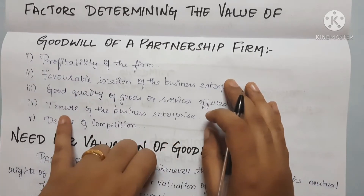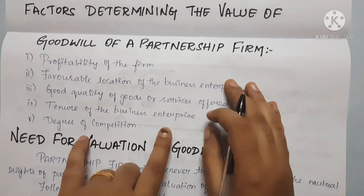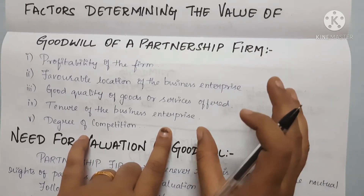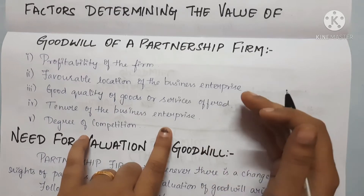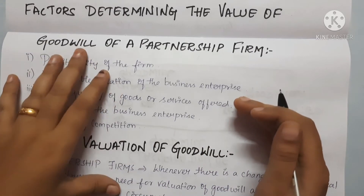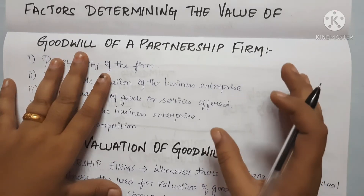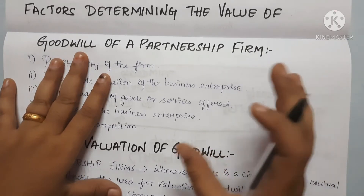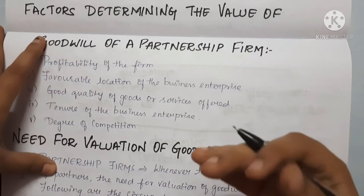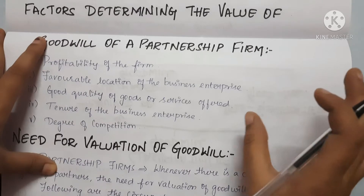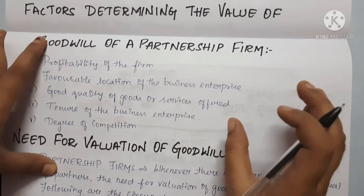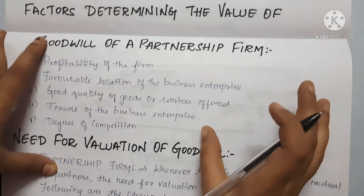Next is the tenure of the business enterprise — the number of years the business has been running. For example, Lifebuoy soap, Colgate — these brands are more than 50 years old. Our ancestors used these products, and they are still existing products. After all these years, they have a good name in the market.